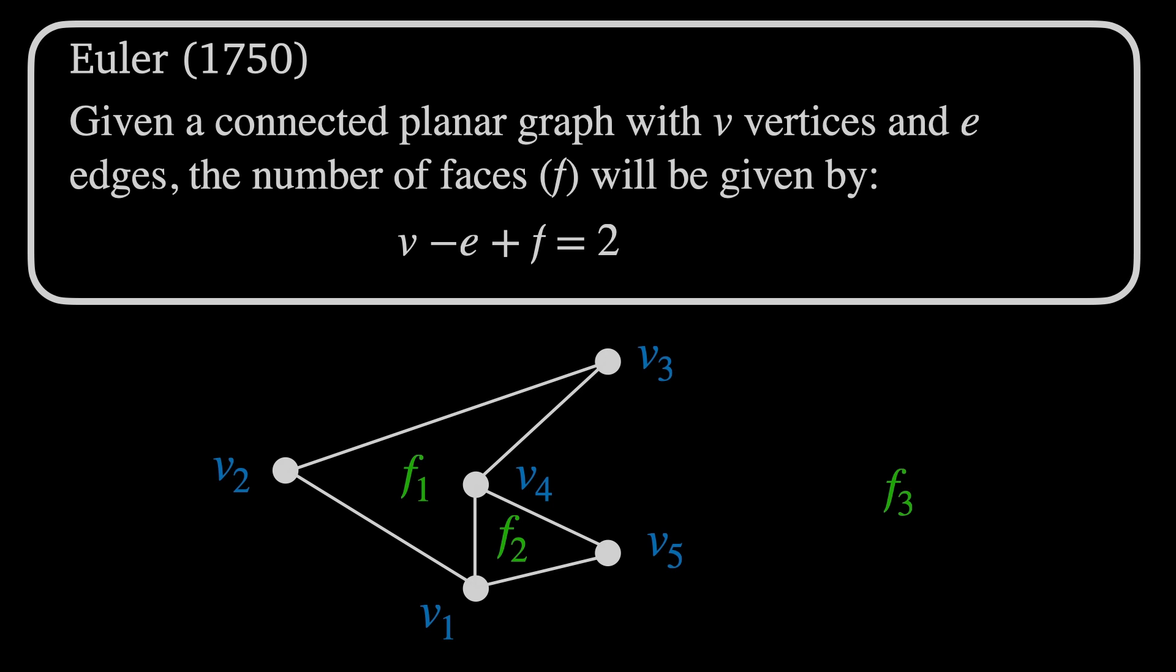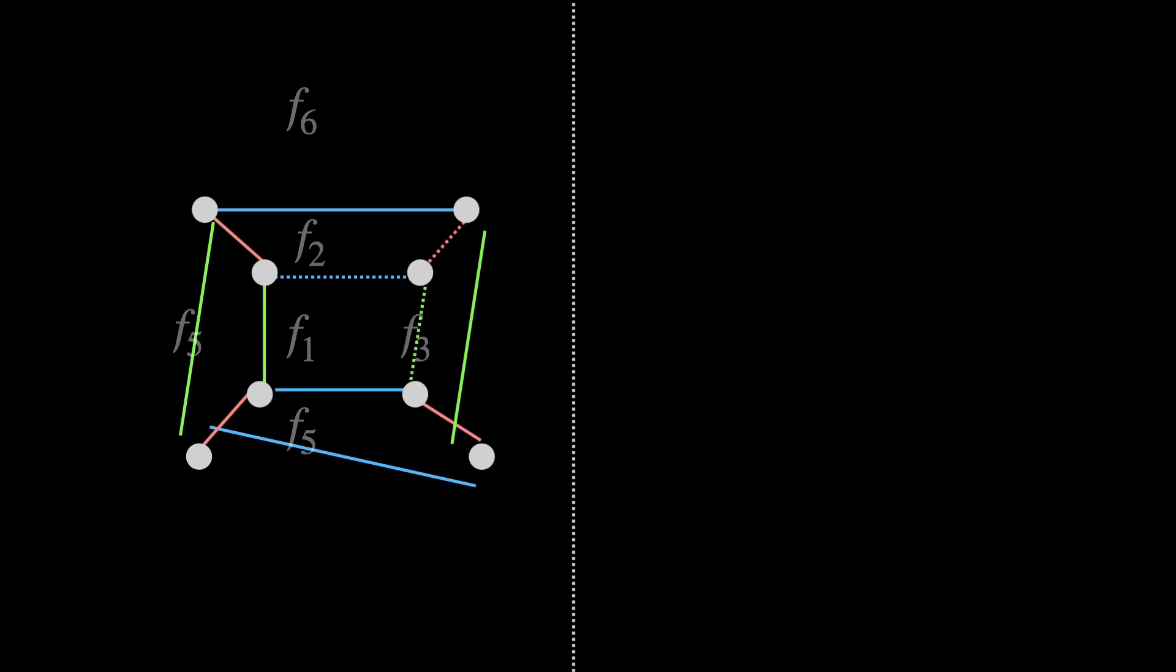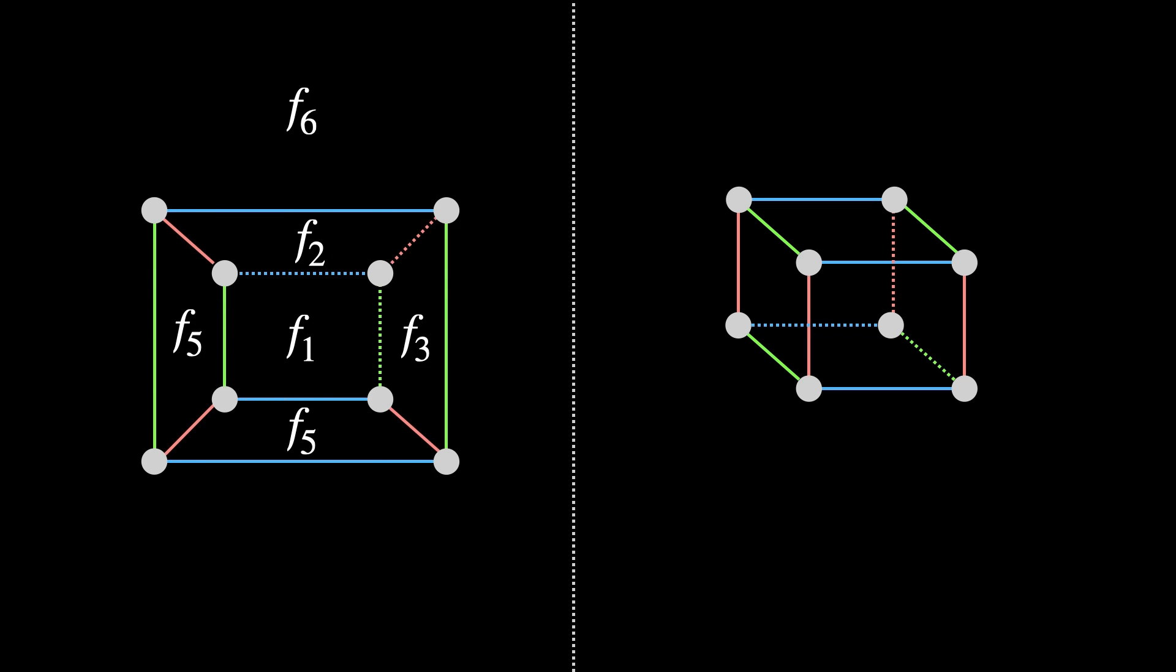This is sometimes called the infinite face and this makes sense if it's put into context. Euler had been working on this kind of mathematics with three-dimensional polyhedra. This graph on the left is topologically equivalent to a 3D cube shown on the right, but only if we include the infinite face F6. Notice that F6 is in contact with the blue and green solid edges which is the same as the top face of the cube.